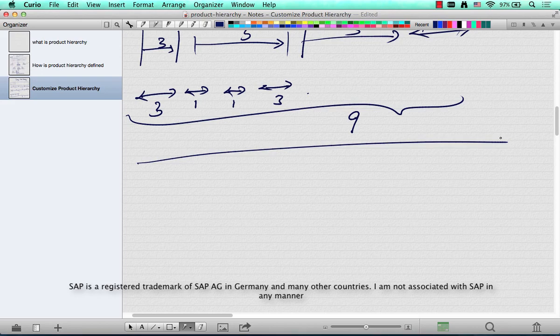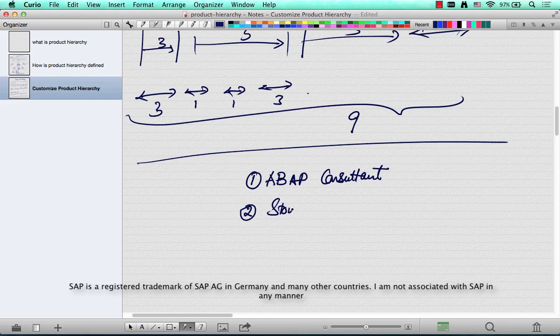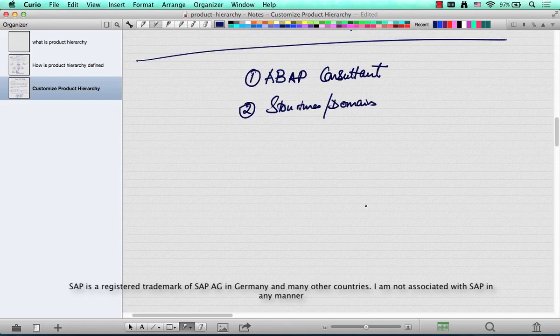Well, for starters, it's not something that you can do as a functional consultant alone, so make sure that you have the help of an ABAP consultant. Okay? And the second thing is you have to understand structures, domains, and all that stuff. Now you don't have to really understand it as long as you give the procedure to your ABAP consultant, he should be able to do it.